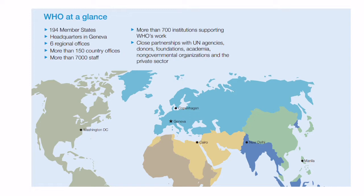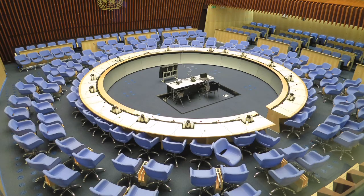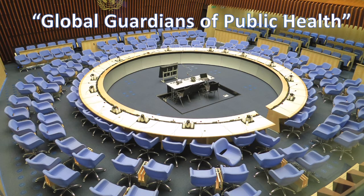It is part of the United Nations and there are six regional offices, but its main headquarters are in Geneva. It employs lots of people and it works very closely with other UN agencies. It's considered to be the global guardian of public health — the standard to which lots of national governments and charities look to is often set by the World Health Organization.